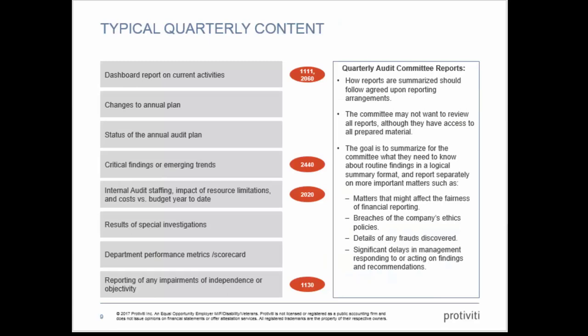The red bubbles on the right are standard numbers for a typical quarterly report. Things reported more frequently include: dashboard on current activities — telling the committee what we're doing, why, what's coming up, what we just completed, linked to standards 1111 and 2060; changes to the audit plan; status of the plan; and critical findings or emerging trends. More and more, boards want internal audit to evaluate information and bring to their attention what they think they ought to be looking at, rather than providing everything and letting them sift through it.